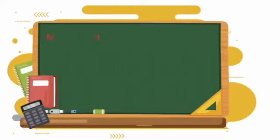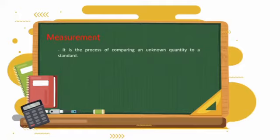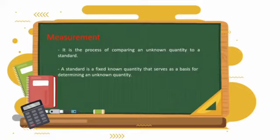In this particular session we will be tackling measurement, particularly the brief history of measurement, the English and the metric system, and the conversion of units. So let us define measurement. Measurement is the process of comparing an unknown quantity to a standard.